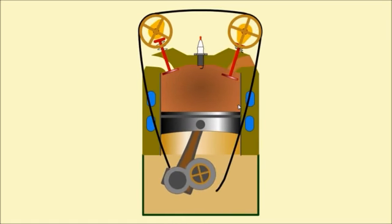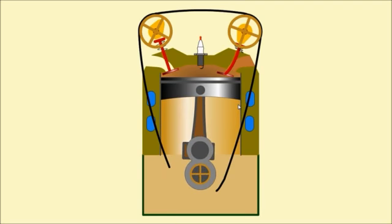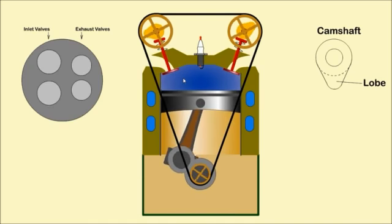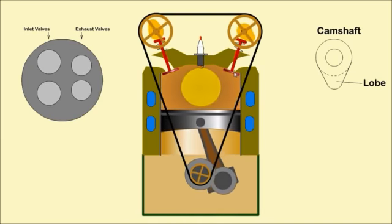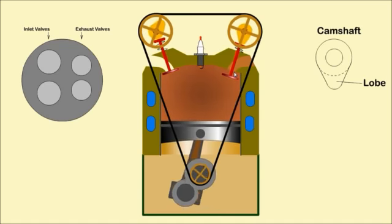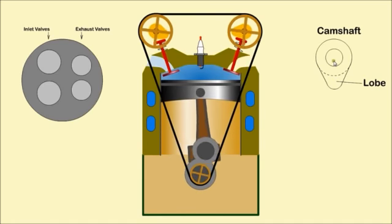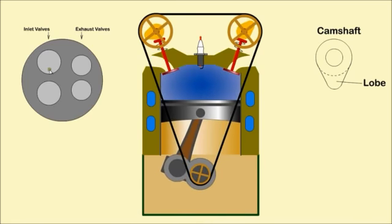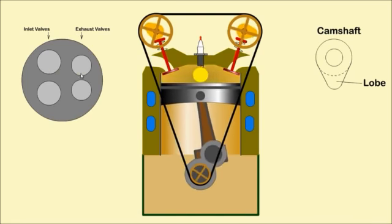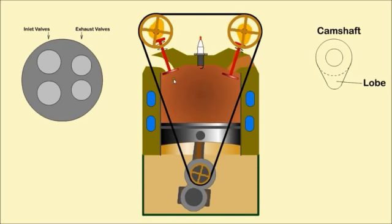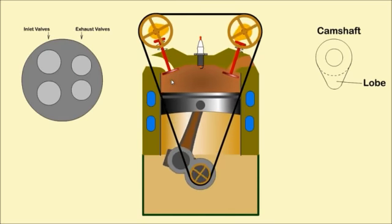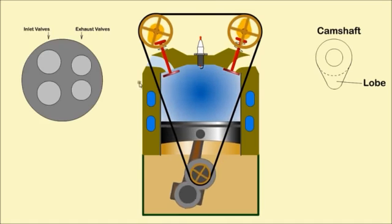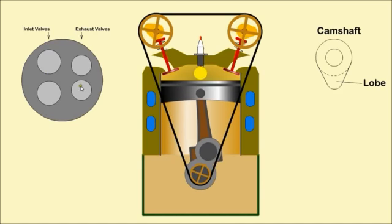Valves are used to allow air to enter and exhaust gas to exit from the cylinder. They are opened by the lobe on the camshaft and closed by spring pressure. Usually, inlet ports are larger than exhaust ports as it is more difficult to get air into the cylinder. Early engines had only one inlet and one exhaust valve per cylinder. Modern engines usually have two inlet and two exhaust valves.